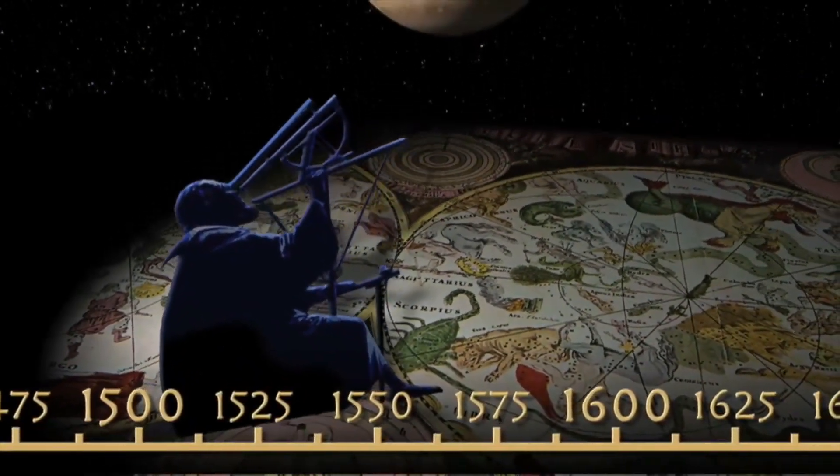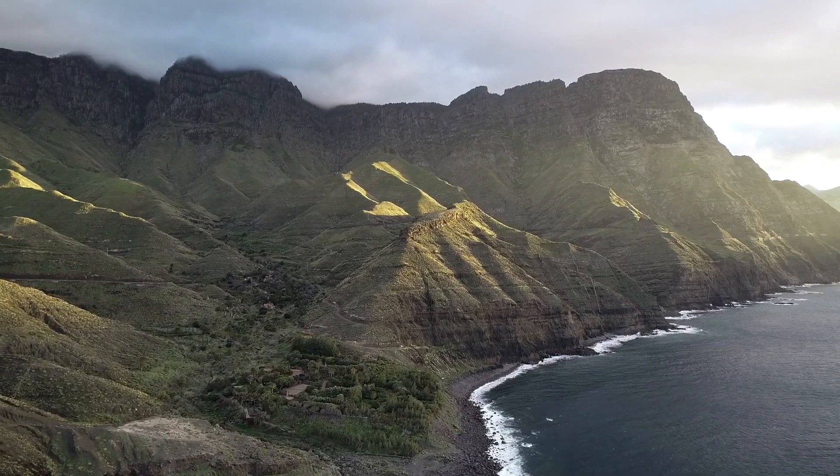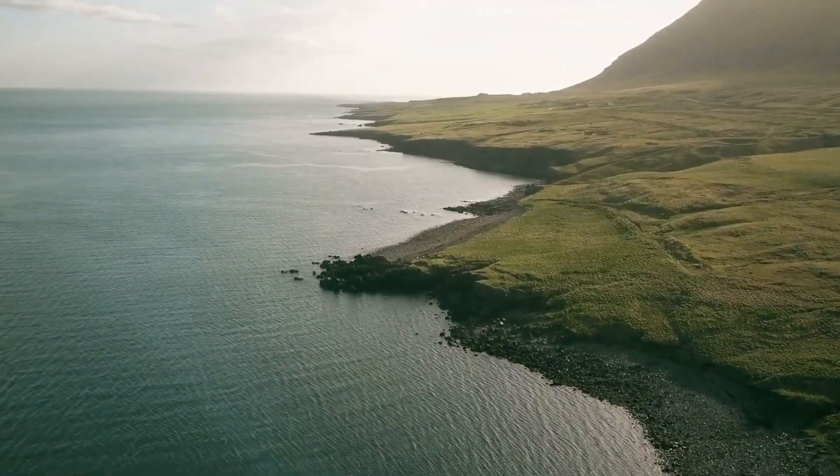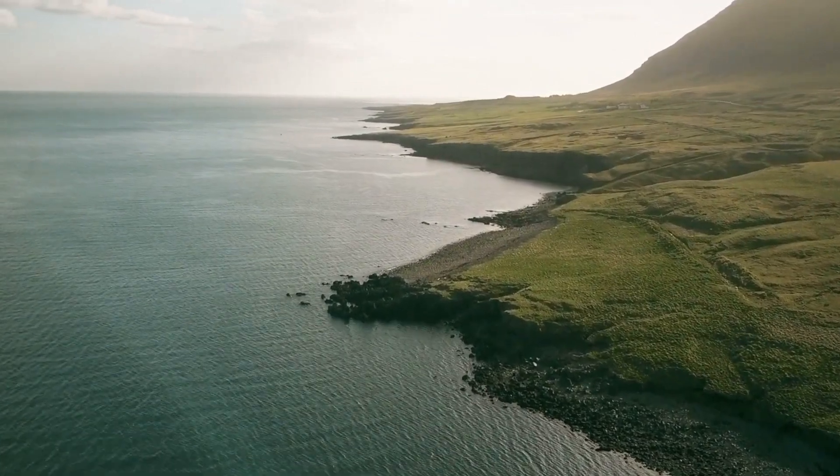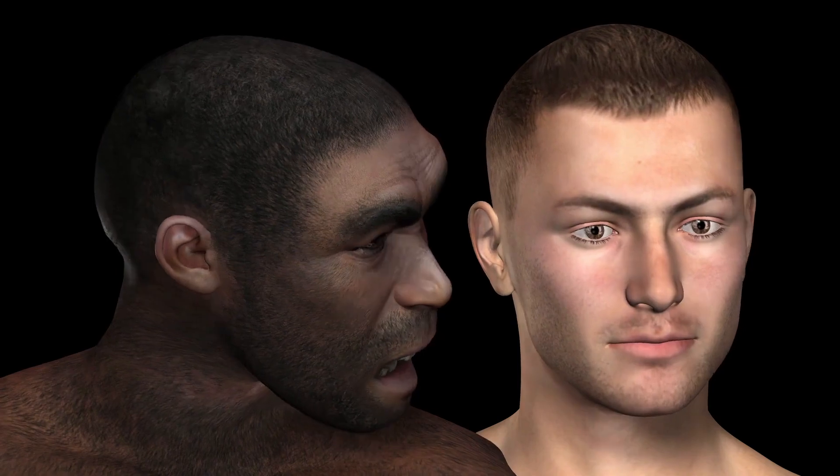While researchers have been searching for other planets for many decades, it is already clear today what distinguishes us from the other satellites in our solar system – water. As the source of all life on Earth, it was water that ultimately played the decisive role in the development of intelligent species on the planet.